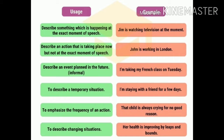Third, it describes an event planned in the future in an informal way, like 'I'm taking my French class on Tuesday.' Fourth, it describes a temporary situation, for example, 'I'm staying with a friend for a few days.' Fifth, it emphasizes the frequency of an action, for example, 'That child is always crying for no good reason.'